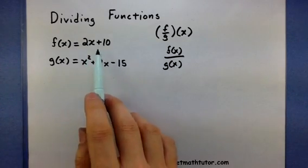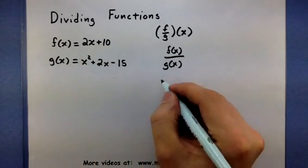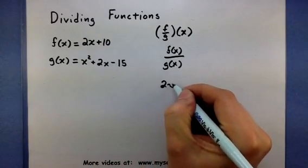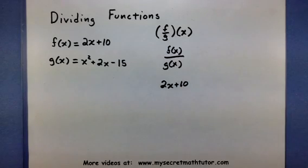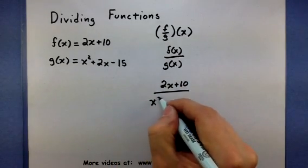Alright, now I can see that I need to put in my expression for f on the top and my expression for g on the bottom. Alright, so this is basically just a substitution problem now. Put that in for the top, take my g expression, put that in for the bottom.